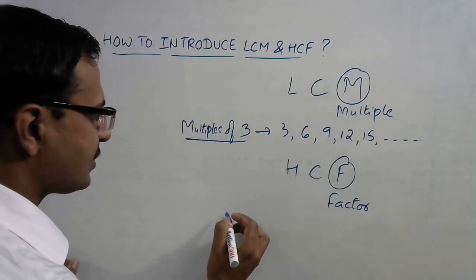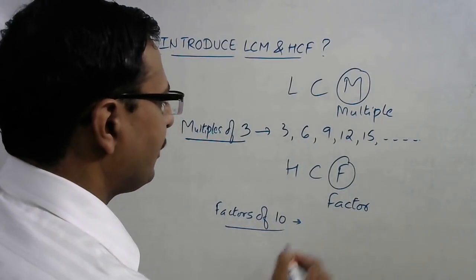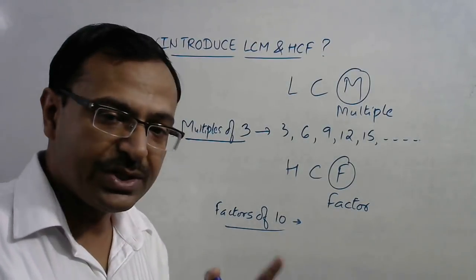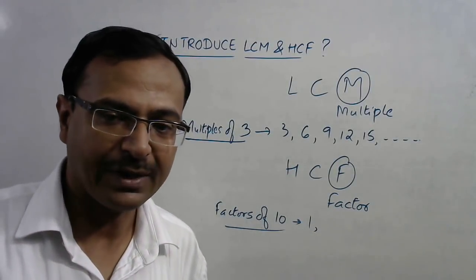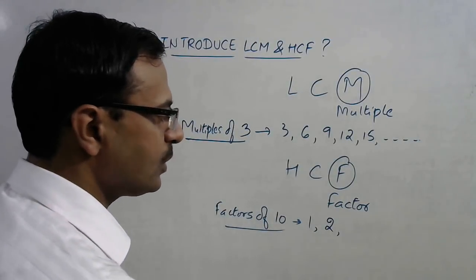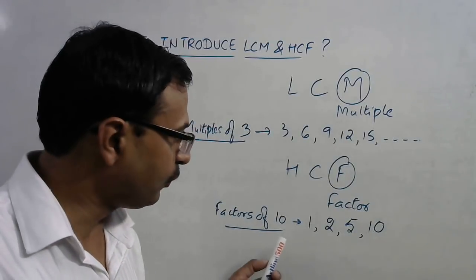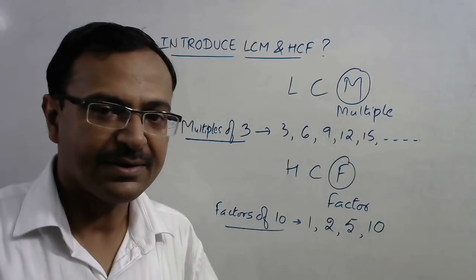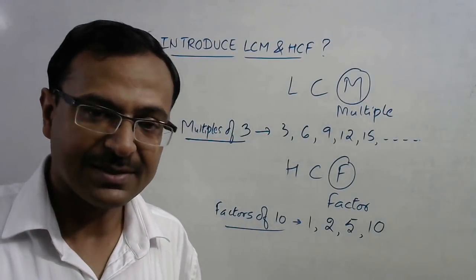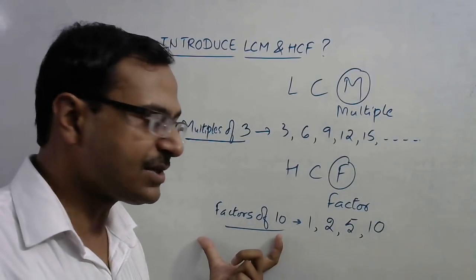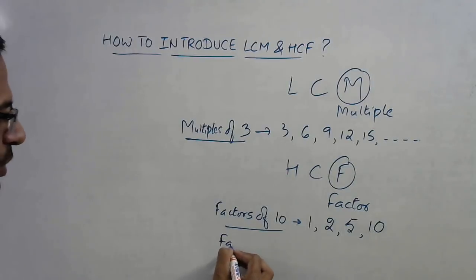Now come to factors. Suppose you need the factors of 10. Ask the students which numbers are the exact divisors of 10. They will tell you that 1 is a divisor of every number, so 1 is a factor of every number. Then 10 comes in the table of 2, the table of 5, and the table of 10 itself — so there are 4 factors of 10. These are factors, not prime factors — that distinction is important and often missed, causing problems at higher levels. Factors of 10 are its divisors: they start with 1 and end with the number itself.